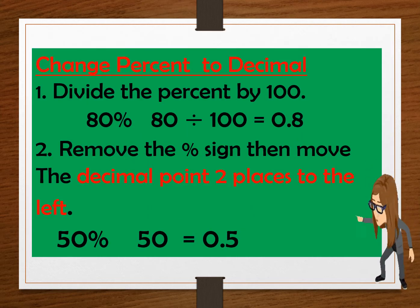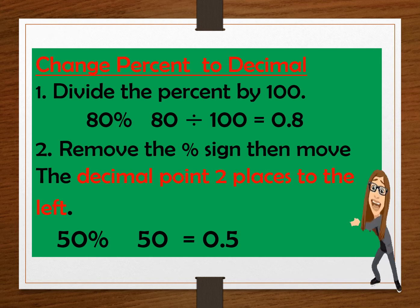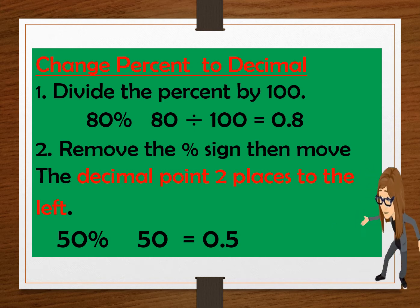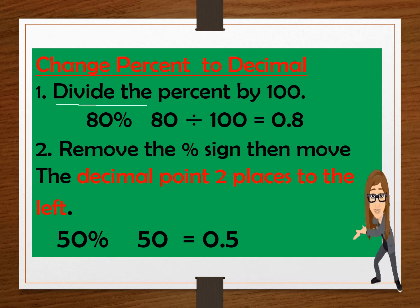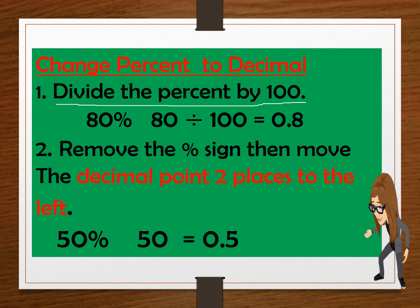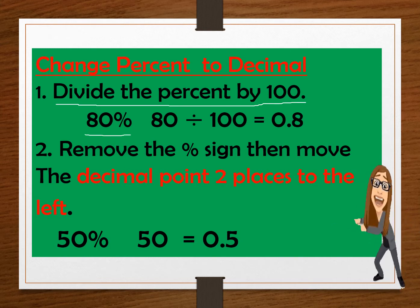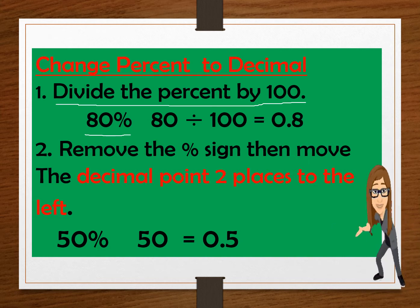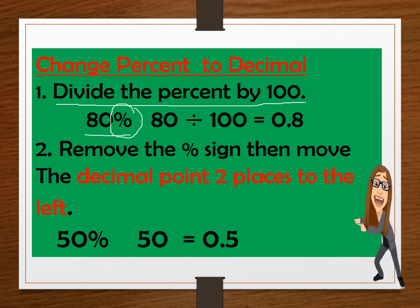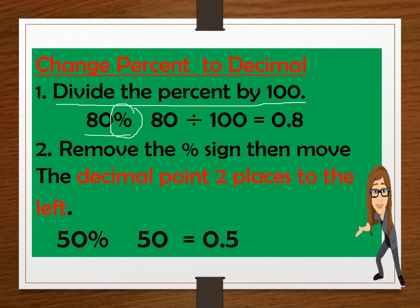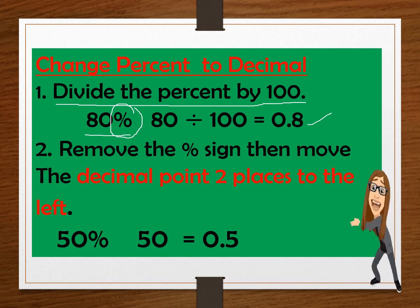Let's go to changing percent to decimals. One, divide the percent by 100. So this is 80%. We need to divide 80% by 100. First, we need to remove the percent sign, and then we divide it by 100. So the answer is 0.8 or 8 tenths.